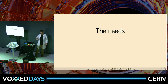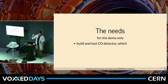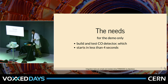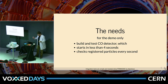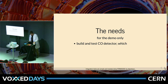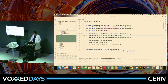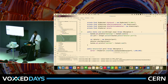What we're going to do now is quickly build a gas detector — for demo purposes only. We're going to build and test this carbon monoxide detector, which should start in less than four seconds, check for registered particles every second, and raise an alarm when a certain level is reached. I'm going to use Java 21 because I need virtual threads. The code is available on my GitHub — you can clone and play with it.